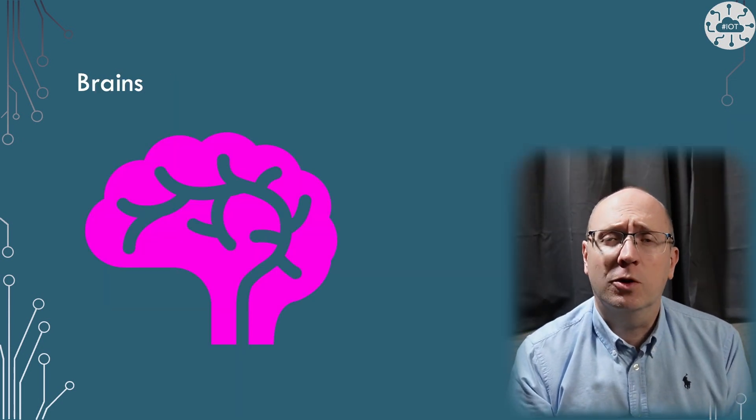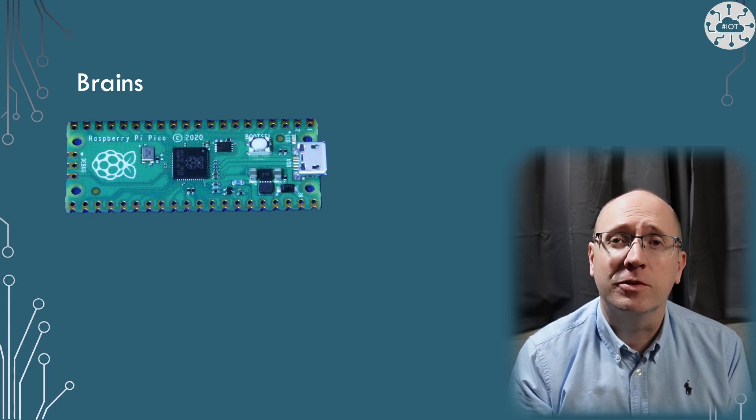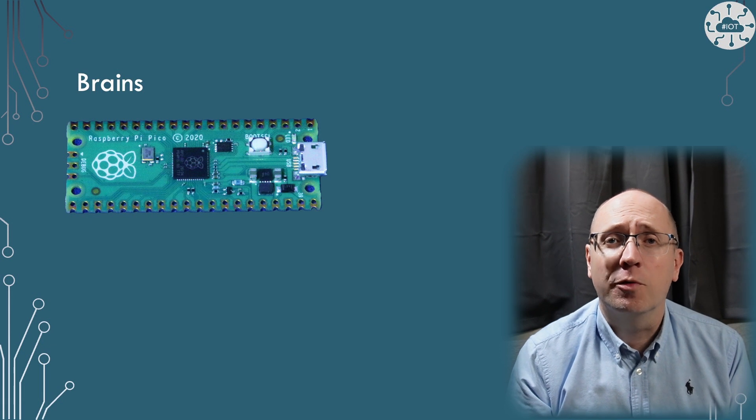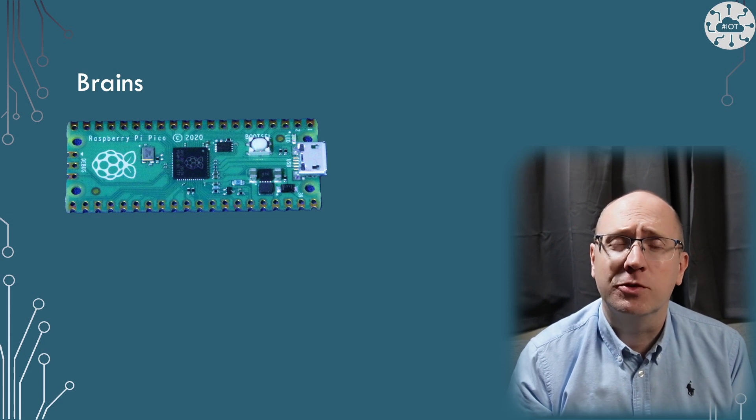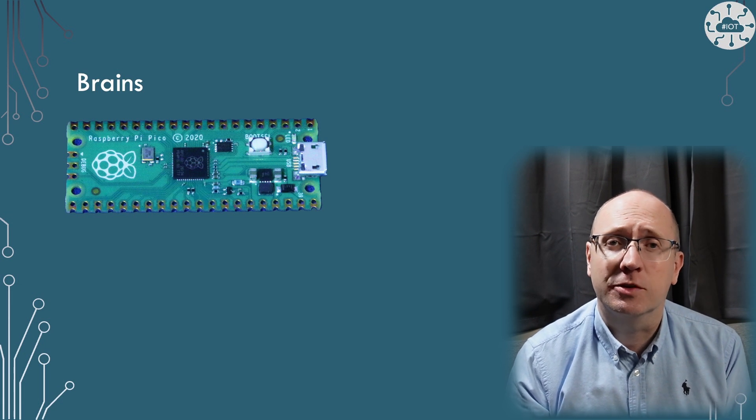So how about the brains of this robot? Well, of course, it's going to have a Raspberry Pi Pico at its center, which is going to do a lot of the low-level control of things like motors, sensors, and odometry, working out where the robot is in space, its angle, its speed, its position, its movement.